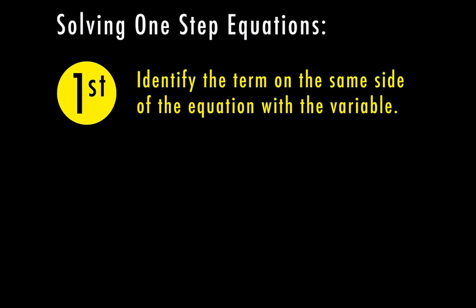So when we're solving one-step equations, our first step is going to be to identify the term on the same side of the equation with the variable. So let's look at a couple of examples. This one I have 4x equals 20. The variable is our x, and the 4 and the variable side by side without any signs or any operations in between means that these are actually multiplying.